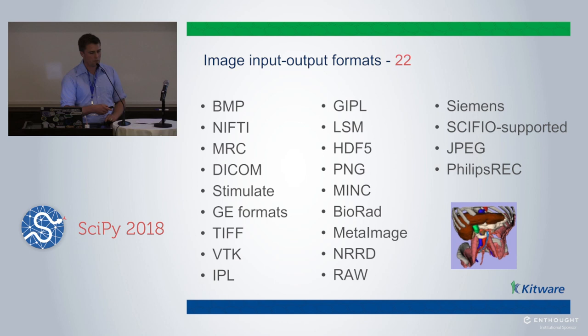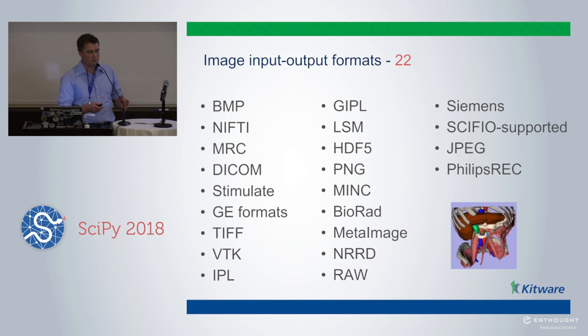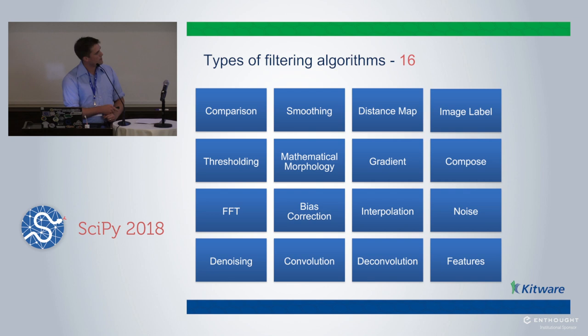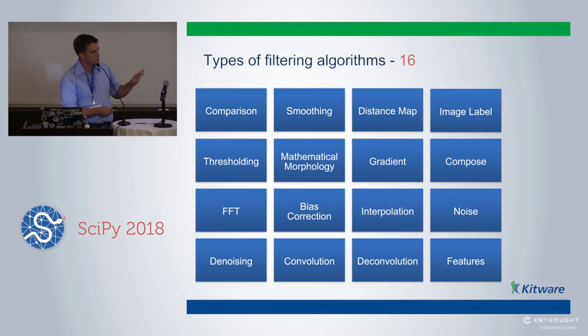The I/O supports all these different image file formats — many of them common file formats, but also a lot of scientific file formats for different domains: TIFF, big TIFF for very large TIFFs you encounter in microscopy, DICOM which you encounter in medical imaging — 22 different file formats roughly. And then there are the different types of filtering algorithms — there are many different filtering algorithms, many implementations within different classes.